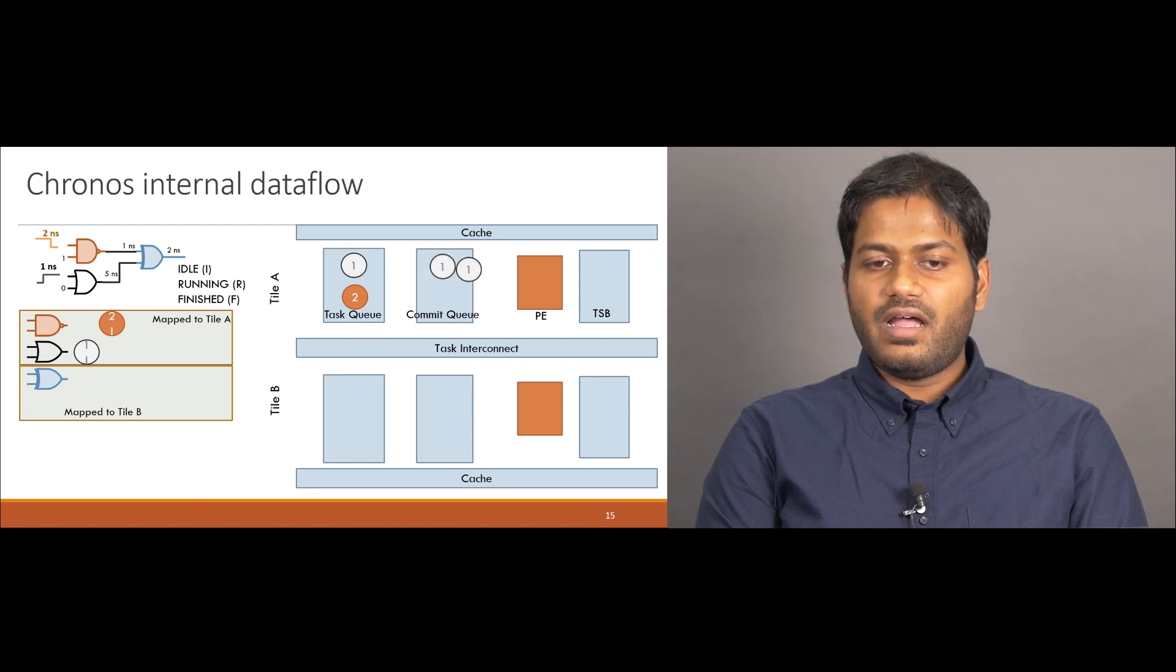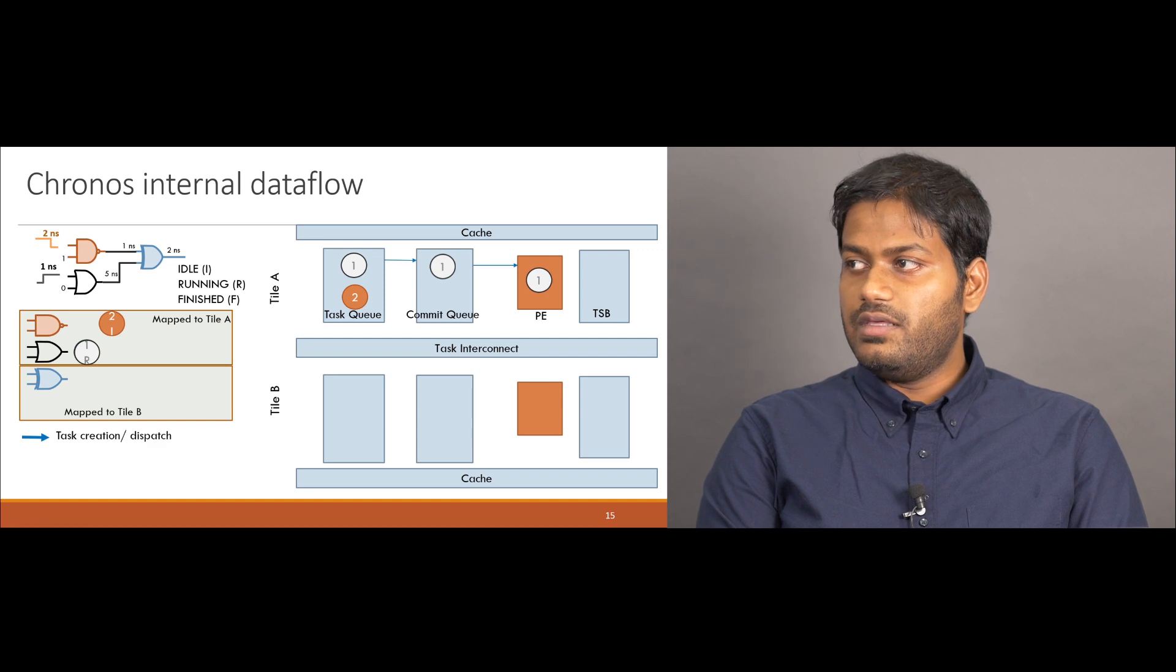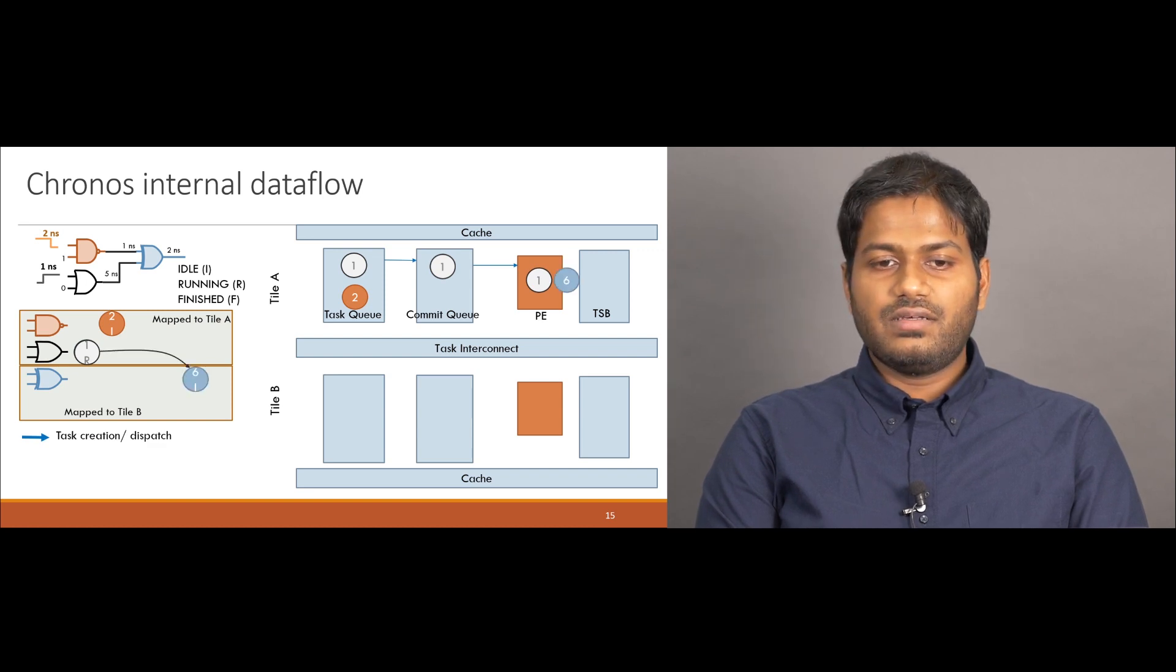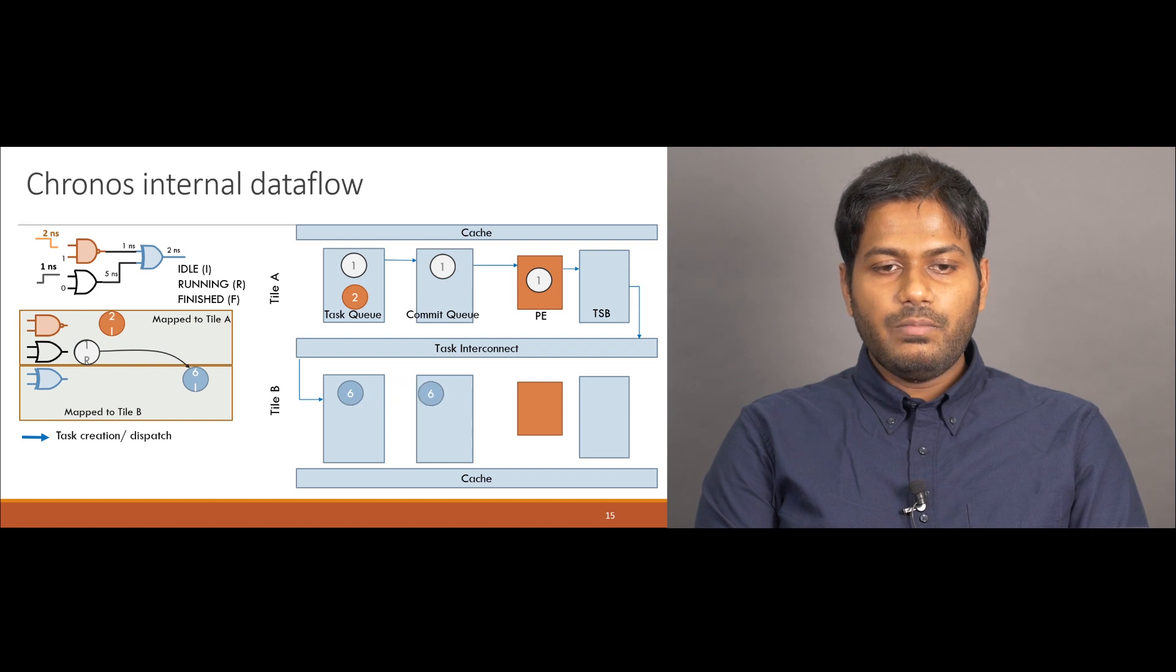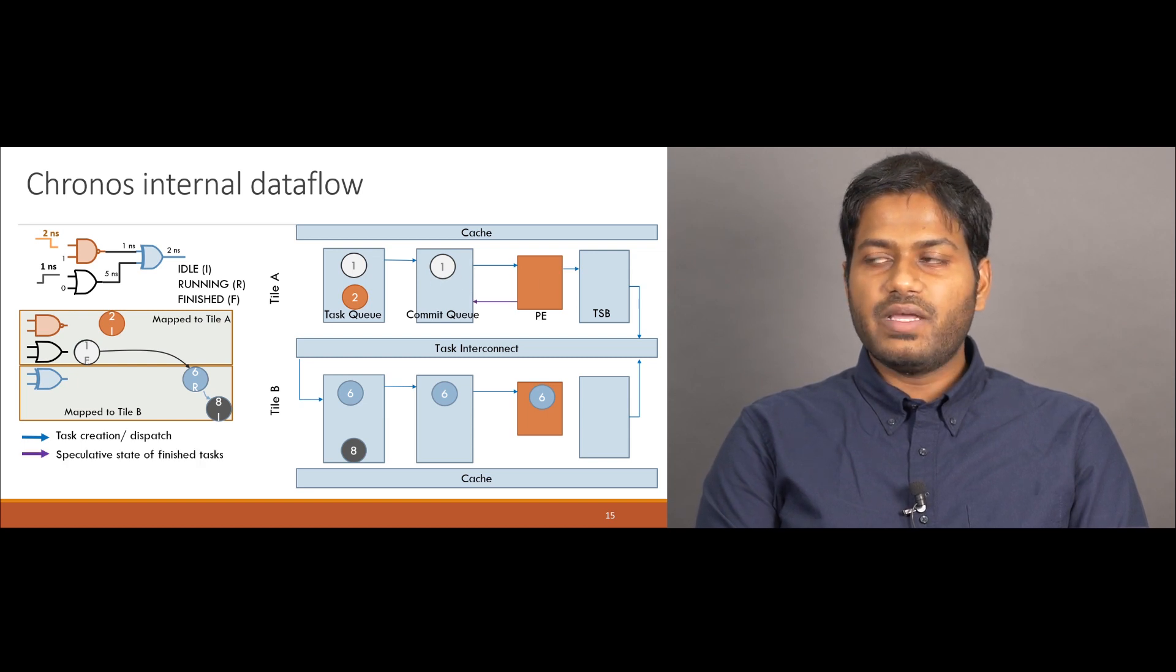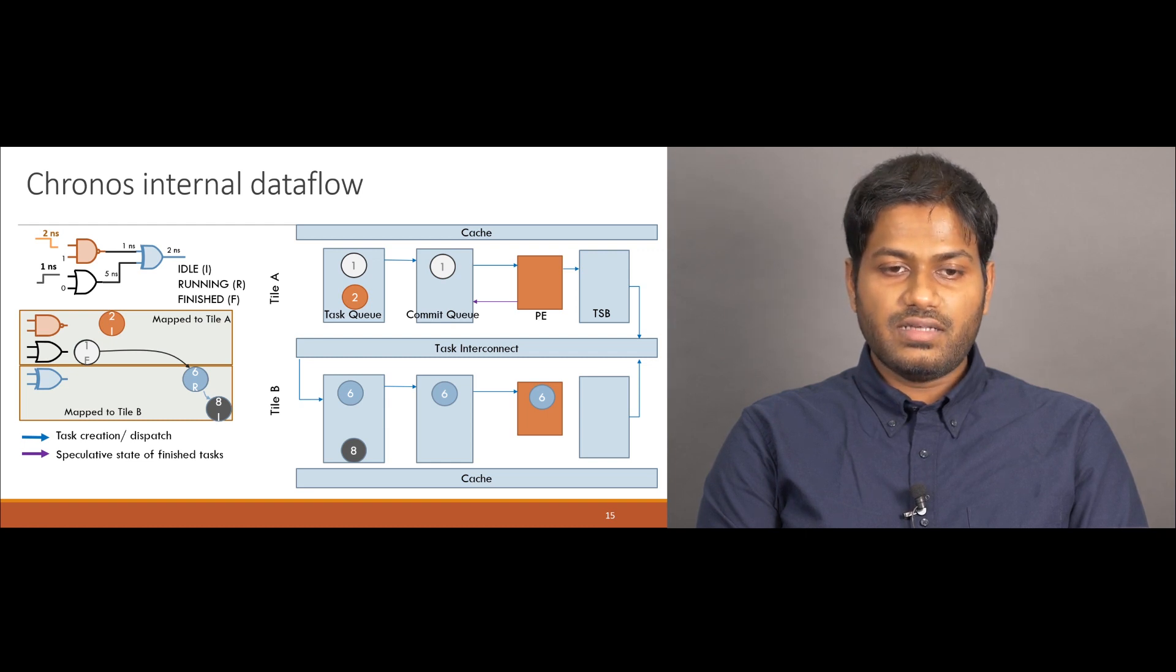Now, task 1 can be dequeued and start an execution in the PE of tile A. This task creates a new task with timestamp 6, which is sent through the task interconnect into the task queue of tile B. This new task can immediately be dispatched to run on B's PE. Now, let's assume that this 6 creates another task with timestamp 8 to communicate with the rest of the circuit. Assume this task is also mapped to tile B. At this point, task 1 finishes, in which case the PE writes its speculative state back onto the commit queue, and the PE is now ready to dequeue another task. Hence, tile A now dispatches task 2 to run on the PE, which would create a children task with timestamp 3.